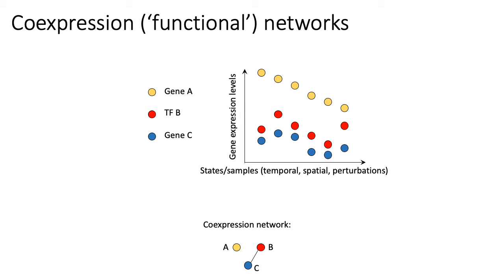In contrast, gene A, represented by the yellow node, moves independently of TFB and gene C, so gene A is not correlated with either. If we were to draw a co-expression network to capture these relationships, we would draw a graph with three nodes corresponding to A, B, and C, with an edge between TFB and gene C to capture the fact that they're correlated across all of these different samples.